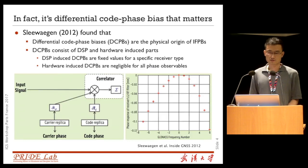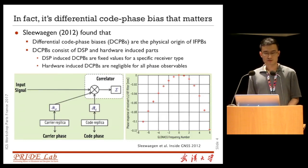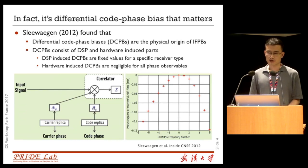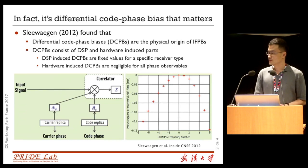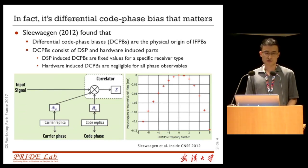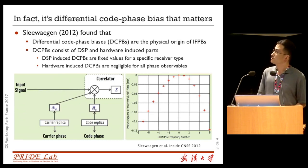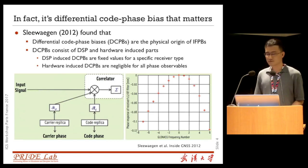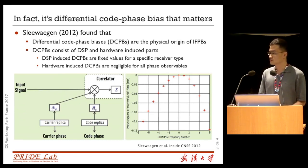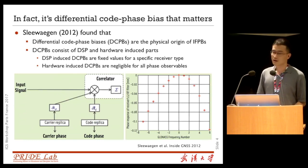In fact, it is the differential code phase bias that matters. According to Sliwagen, differential code phase bias is the physical origin of IFPB. It consists of two parts: one is the digital signal processing part, and the second is the hardware-induced part. The DSP-induced parts are fixed values for a specific receiver type from the same manufacturer, and hardware-induced DCPB are negligible for all-phase observations.